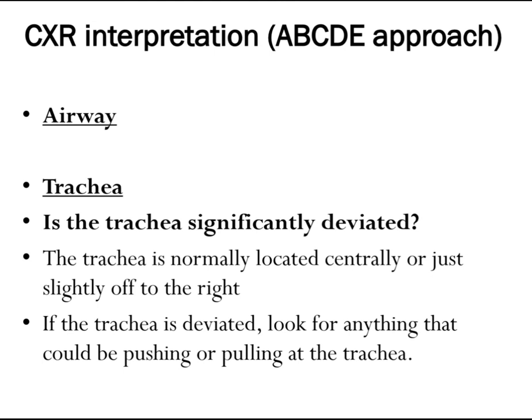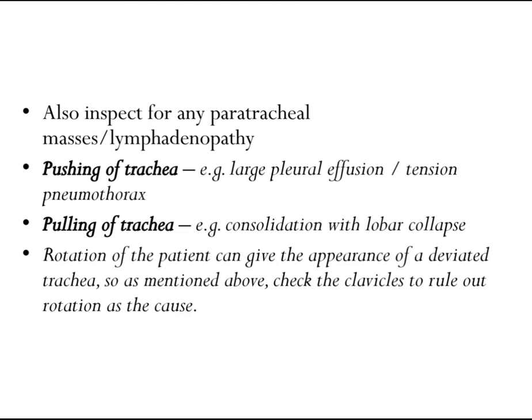Chest x-ray interpretation uses an ABCDE approach. A is for Airway. Start with the trachea — it is normally located centrally or just slightly off to the right. If the trachea is significantly deviated, look for anything that could be pushing or pulling it. Also inspect for any paratracheal masses or lymphadenopathy pushing the trachea, for example a large pleural effusion or tension pneumothorax pushing it away, or consolidation with lobar collapse pulling it toward the affected side.